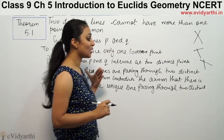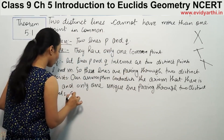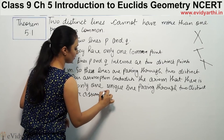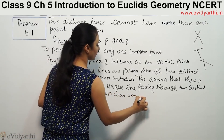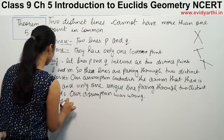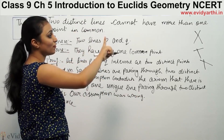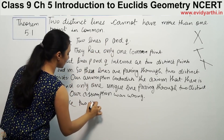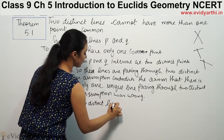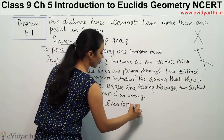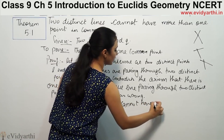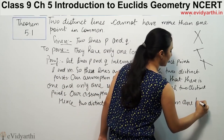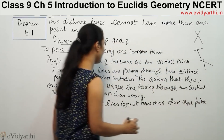So that means our assumption was wrong. Hence, two distinct lines cannot have more than one point in common.